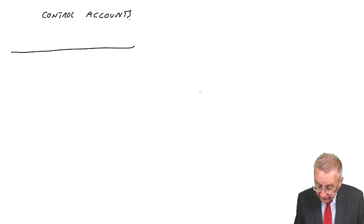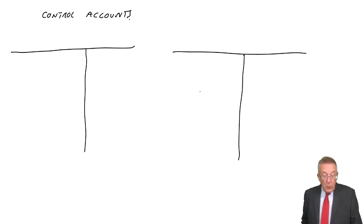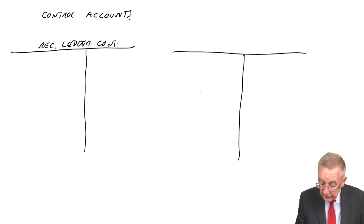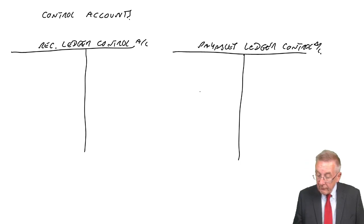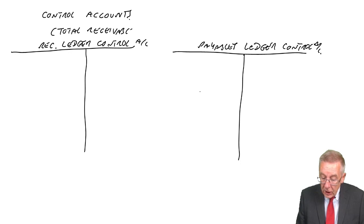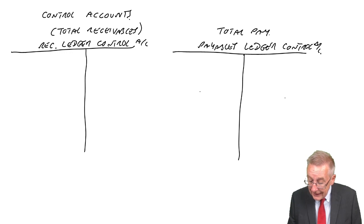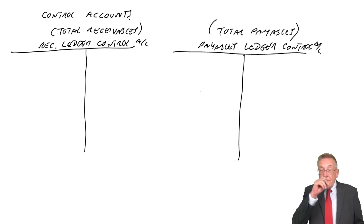Let's open these accounts. We're going to write up, I'll do them side by side to save going up and down the screen, the receivables ledger control account and the payables ledger control account. The receivables ledger control account is simply total receivables, the total receivables account in the nominal, the general ledger. Payables ledger control account is the total payables account.